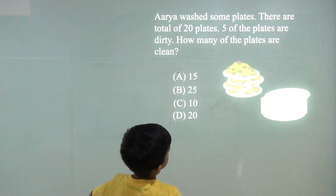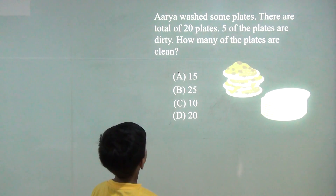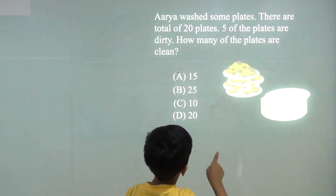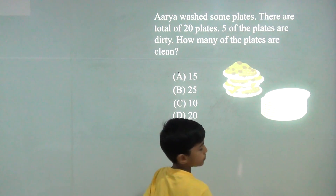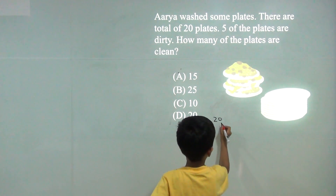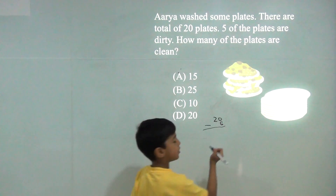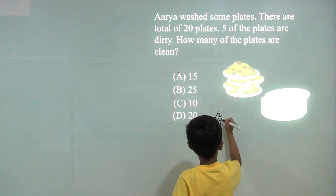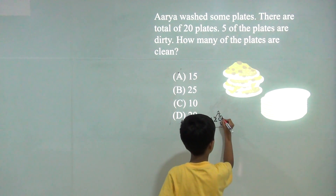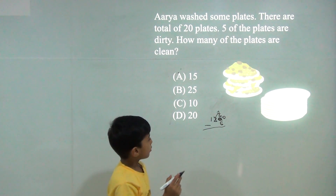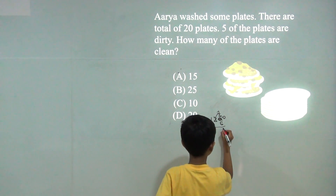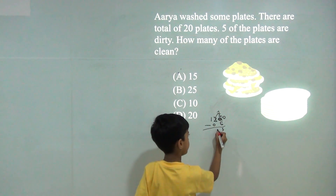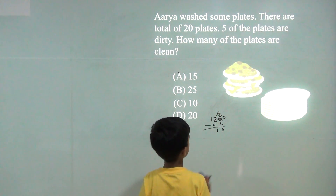Agnya washed some plates. There are a total of 20 plates and 5 of the plates are dirty. How many of the plates are clean? So we will do 20 minus 5. We have 0 here, so 0 minus 5 we can't do. So 2 will become 1 and 0 will become 10. So we will do 10 minus 5 is 5, and now there is only 1. So the answer would be 15.